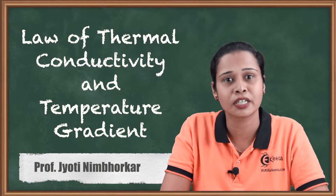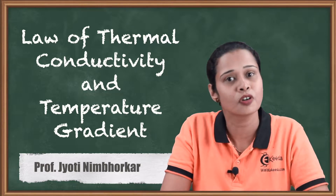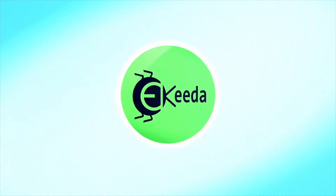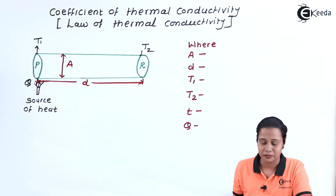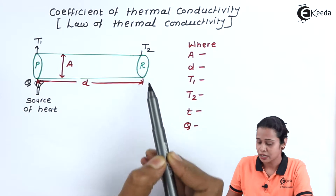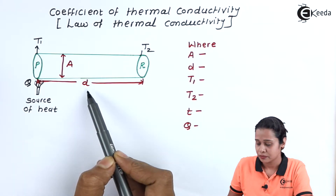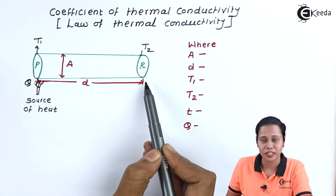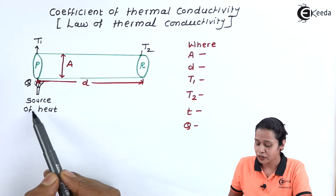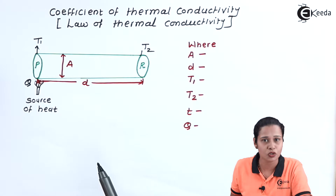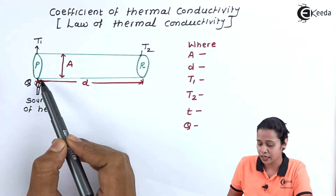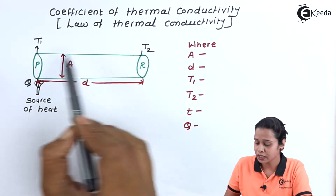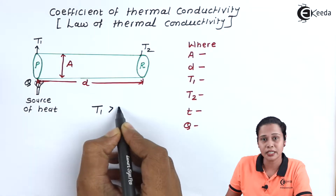We will see what are the factors which are affecting the transfer of heat, that is for the process of conduction. Let us start with the diagram. We have a rod PR. The length of the rod is D and the cross-sectional area of the rod is capital A. It has two faces, P and R. We are heating the first face using a source of heat, so the first end P will have a higher temperature compared to the other end. We can say T1 is greater than T2.